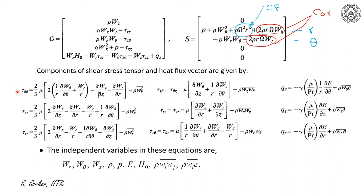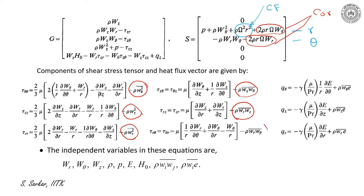I have illustrated the stress tensor and heat flux vector. tau_theta_theta, tau_zz, and tau_rr are the principal stresses, while tau_z_theta, tau_rz, and tau_r_theta are shear stresses. Note that in these principal and shear stresses, apart from the laminar component, there are additional terms which appear because of turbulence fluctuations. Let me explain Reynolds decomposition.